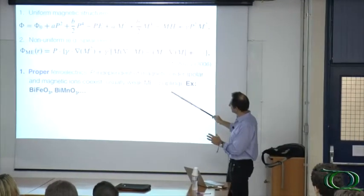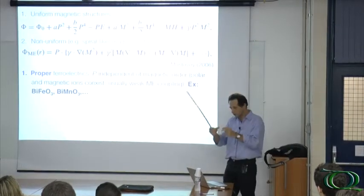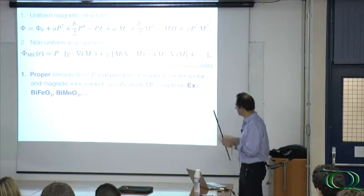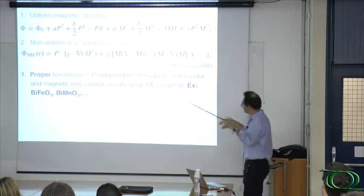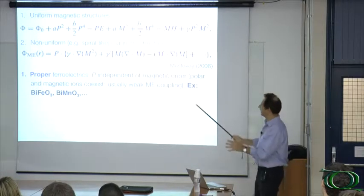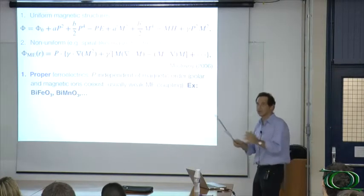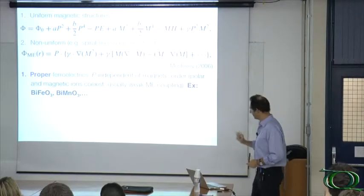But the problem is that you have both polarization and magnetization, but usually the coupling is weak because the two orders are associated with two distinct sub-lattices in the crystal structure. So here you have large polarization, large magnetization, but weak coupling between the two.